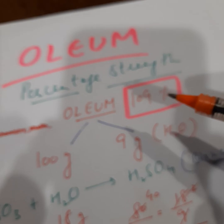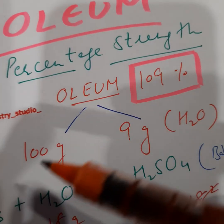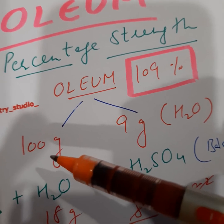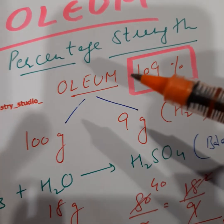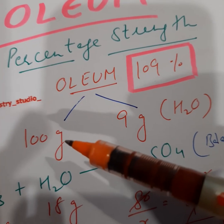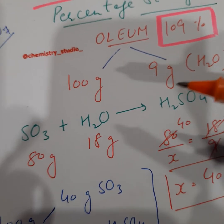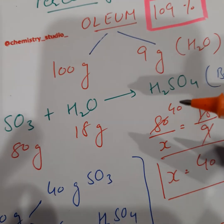Now what does 109% mean? It means that when 100 grams of such a sample is taken, the sample is sulfuric acid which contains some dissolved sulfur trioxide. So when 100 grams of such a sample is taken, it is going to require 9 grams of water so as to convert all the sulfur trioxide present in the sample to sulfuric acid.